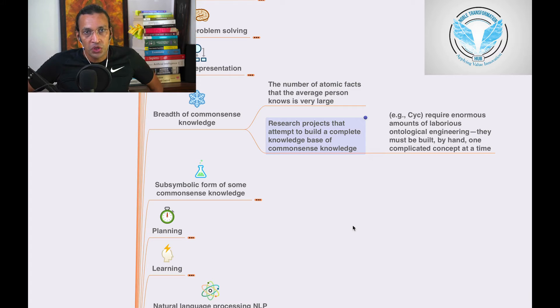And then we see things from our perspective, not as the universe functions. So, here, the same thing is breadth of common sense knowledge requires enormous amounts of laborious ontological engineering.